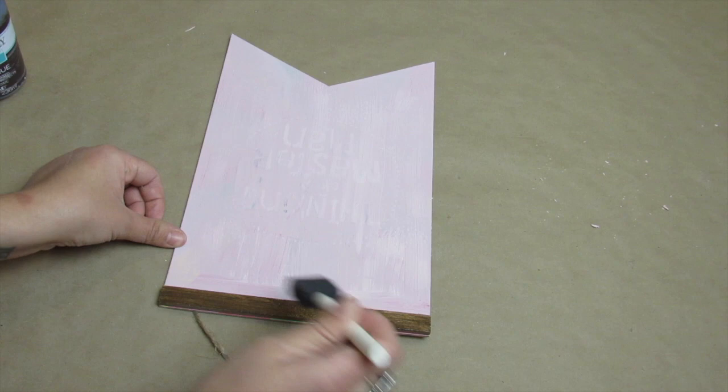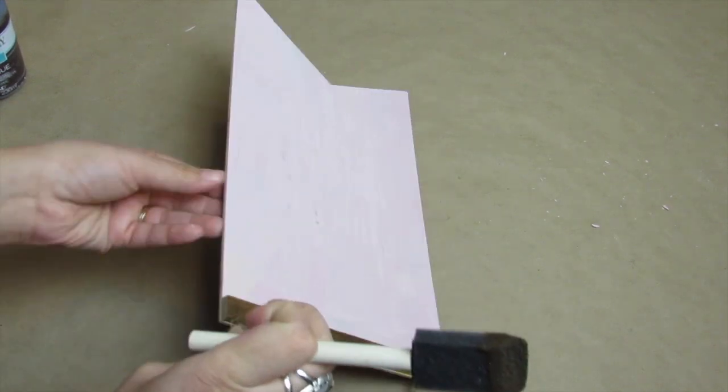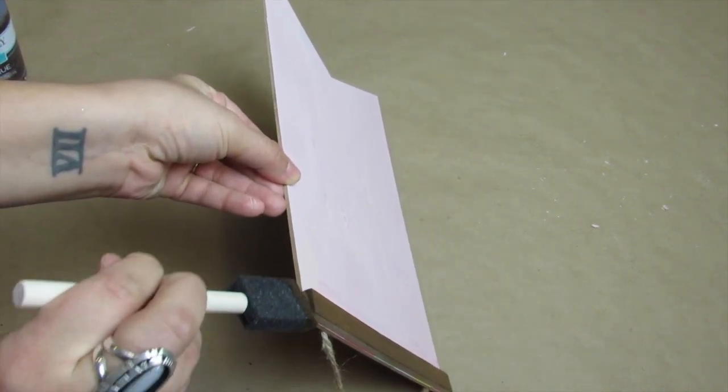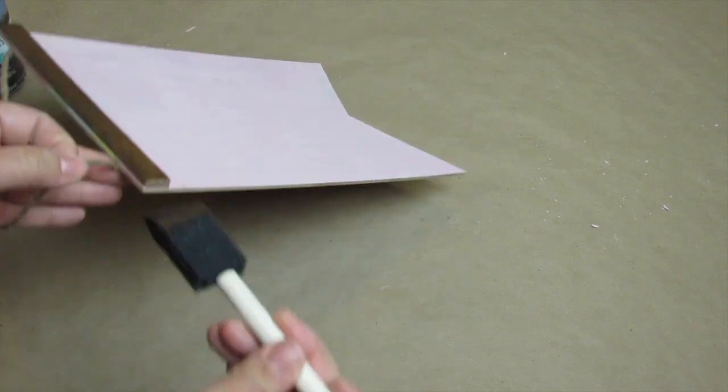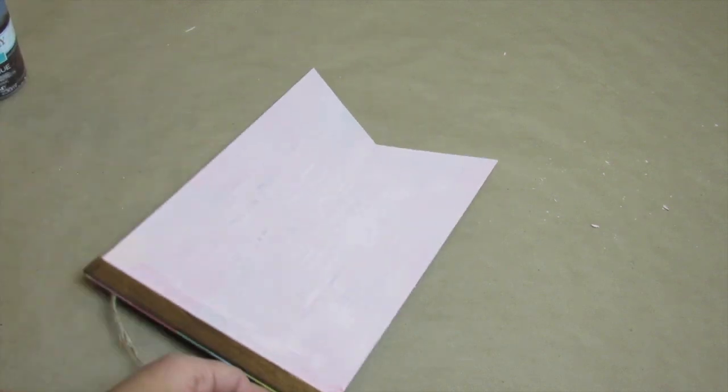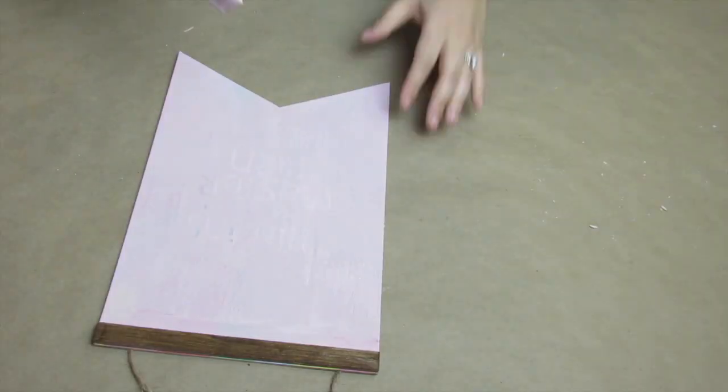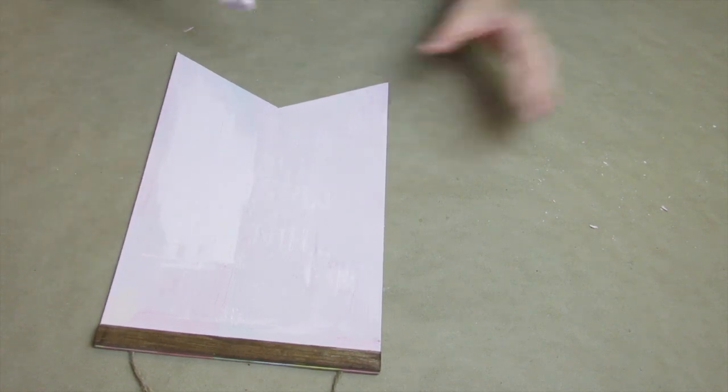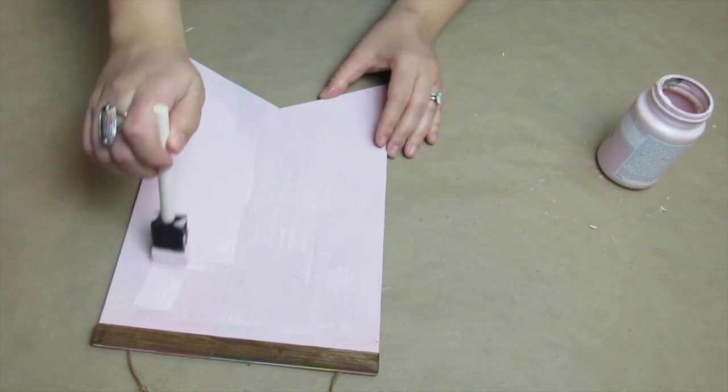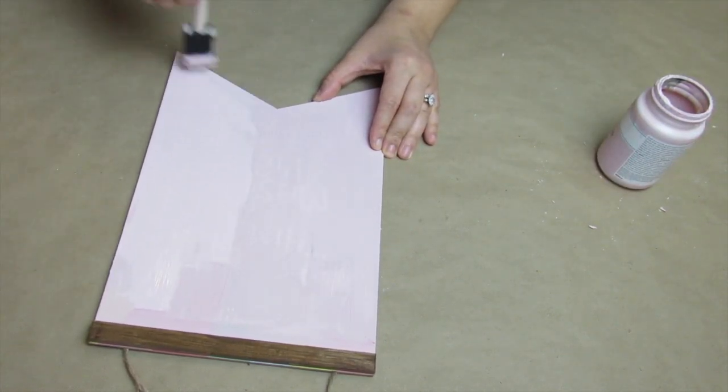I just felt like the Antique wax against that really light Ballet Slipper paint looked so pretty. Also, make sure that you paint the sides with the antique wax, and then I'm just going to give this sign my second coat of the Ballet Slipper Waverly chalk paint.